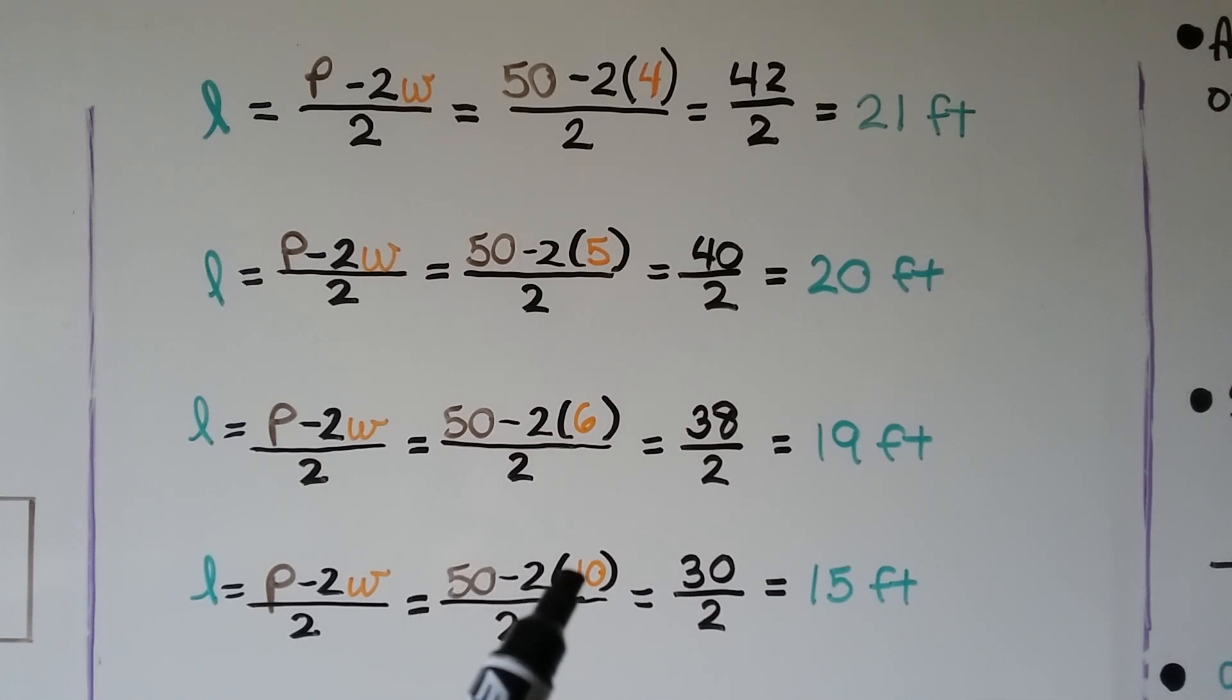If it's 10 for the width, we're going to end up with 30 divided by 2, which is 15 feet for the length. So we were able to substitute the different values for the width to find the different values for the length for Emma's dog run.